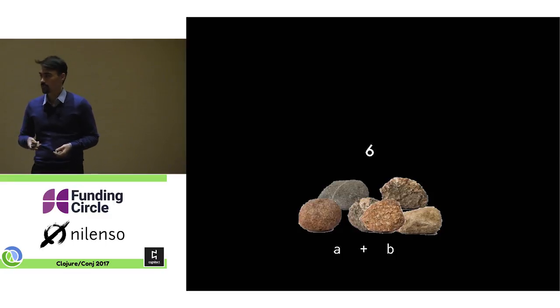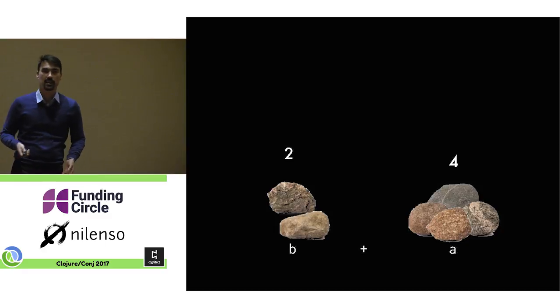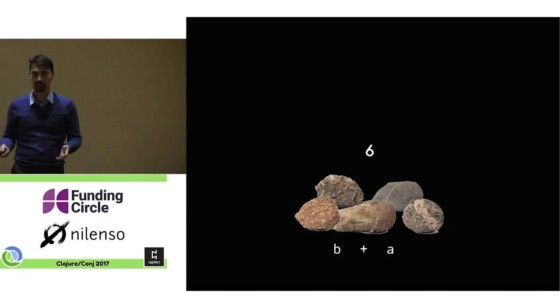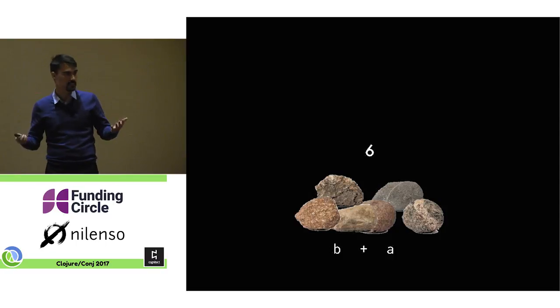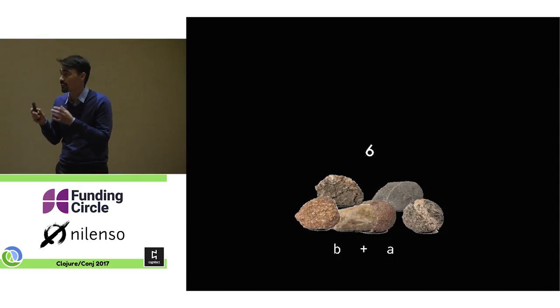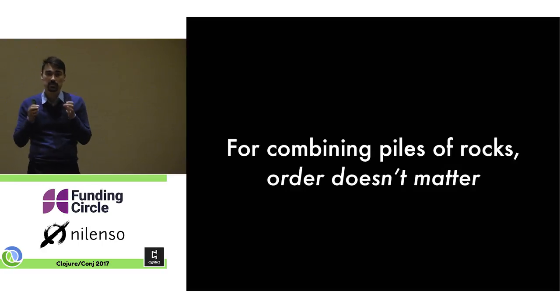Now we could also go the other way. We could start with the small one, B, and add the bigger one on top and pile of rocks at the end. At least, the structure is different, like the pile is different, like the arrangement of rocks. But the count is the same, right? And we learn this as kids. And there's something about this where for combining rocks, order doesn't matter. We need to preserve this when we translate it into our information system, into our logbook.